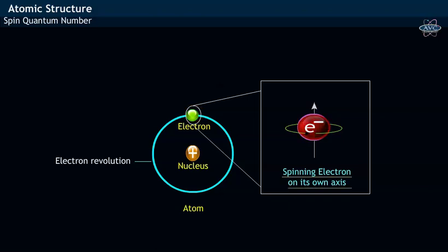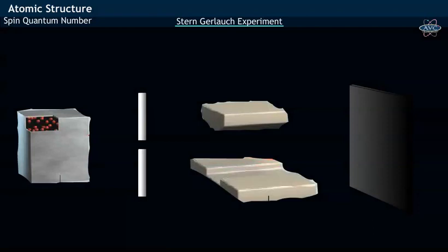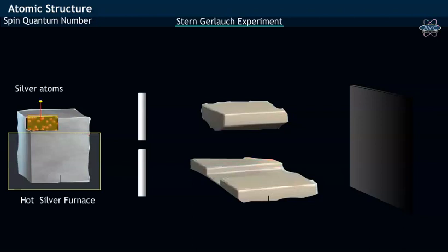The existence of spin of electron was established and demonstrated using Stern-Gerlach experiment. The experimental apparatus used during this experiment consisted of a hot furnace of silver atoms and a slit.